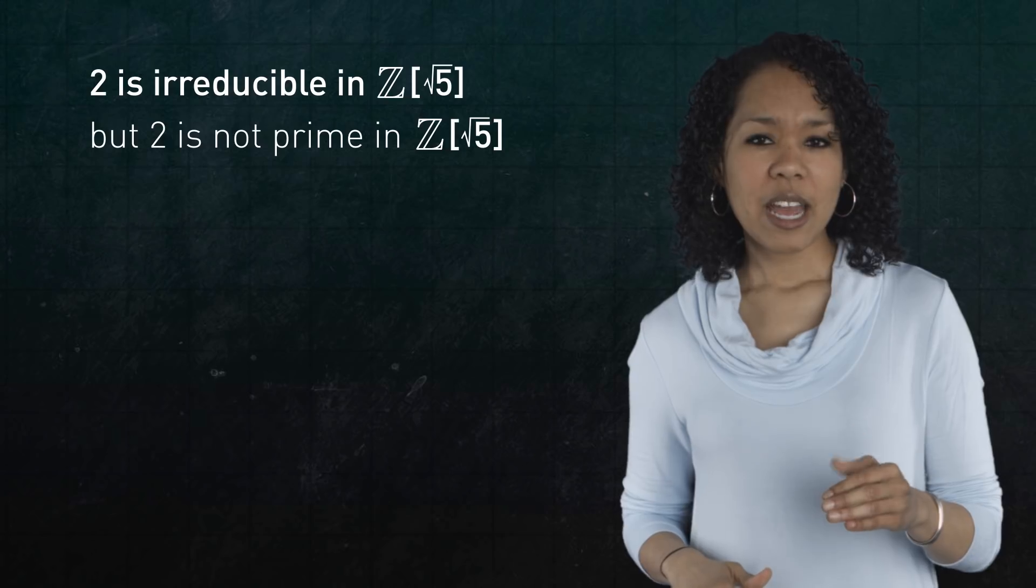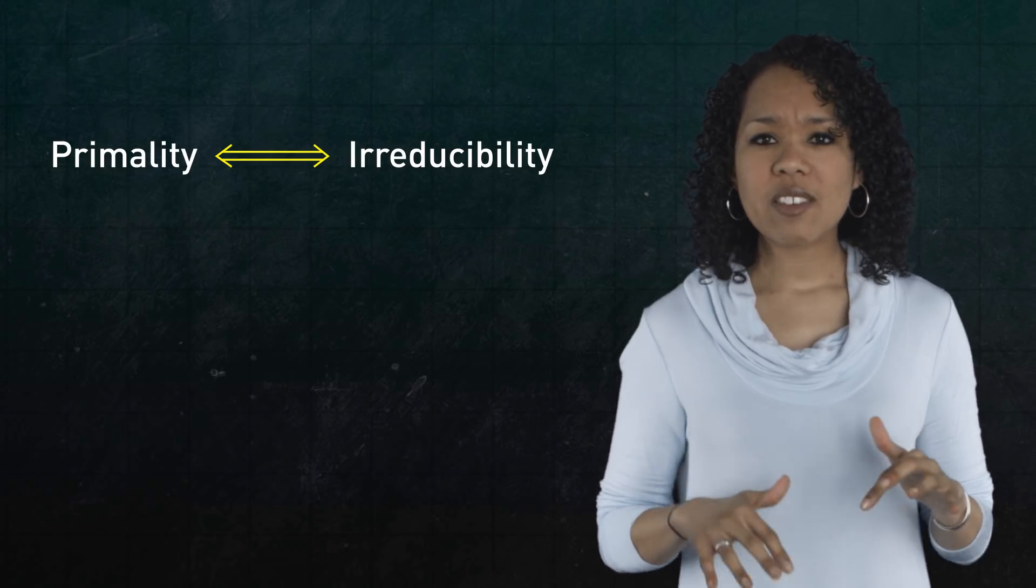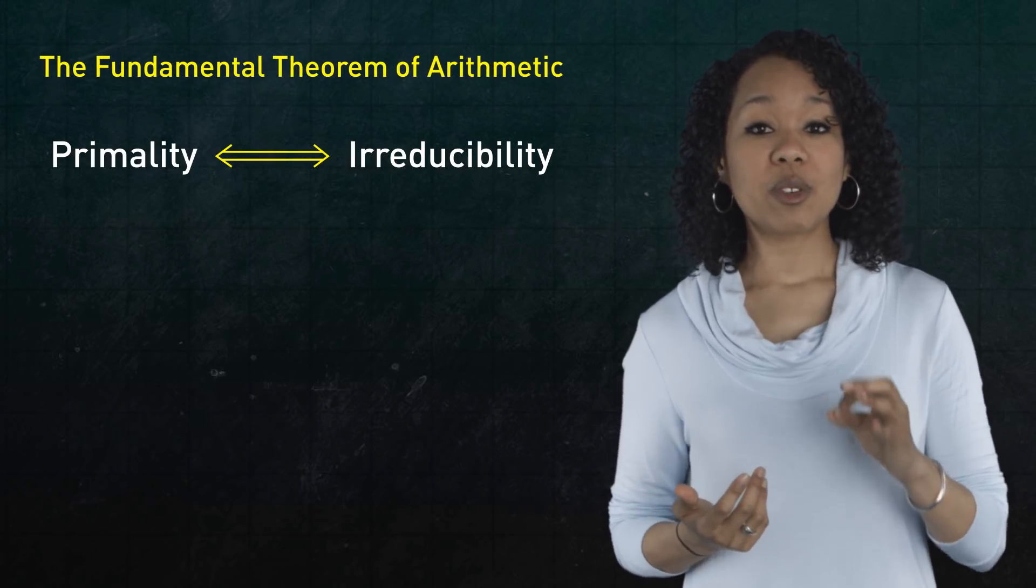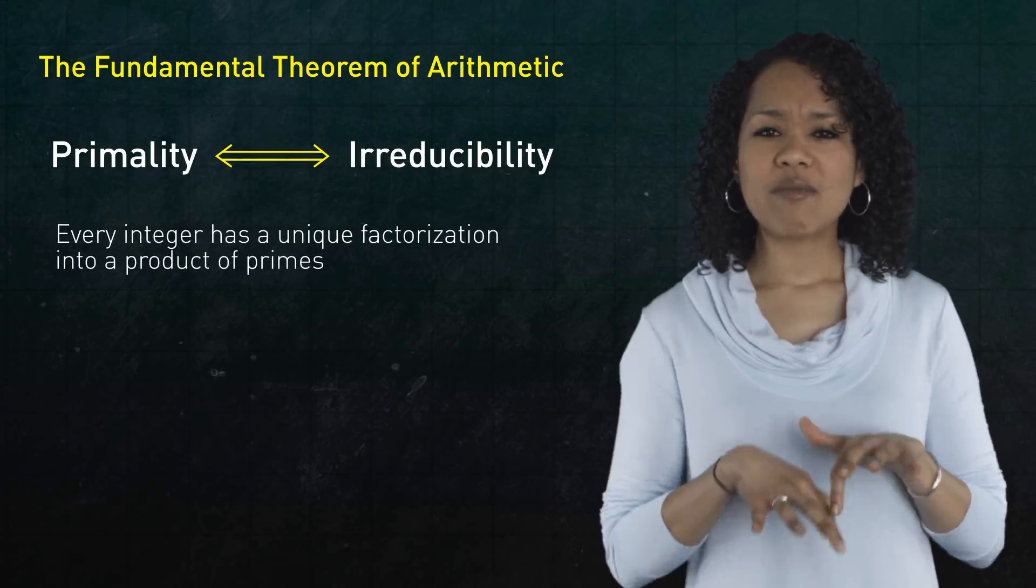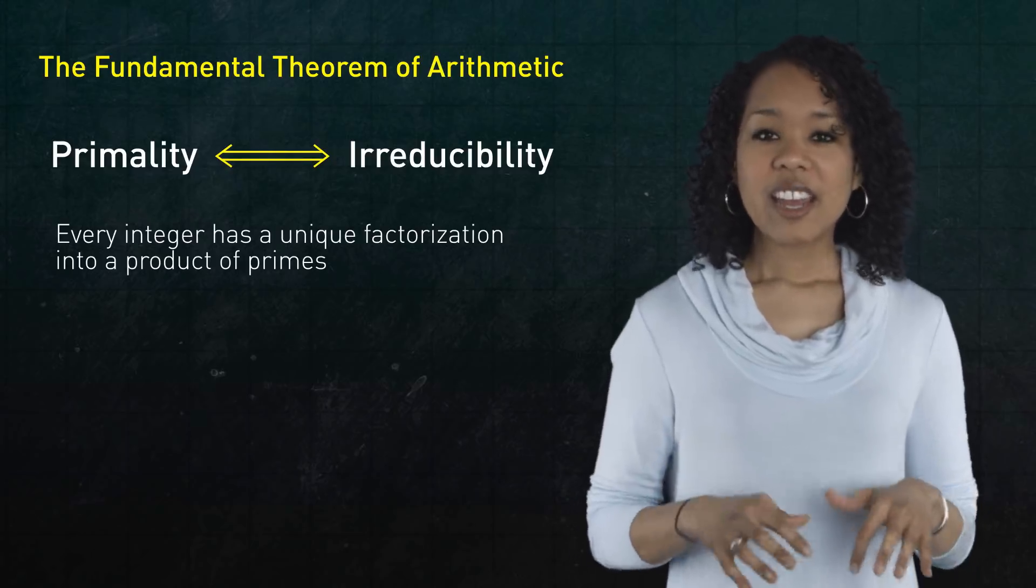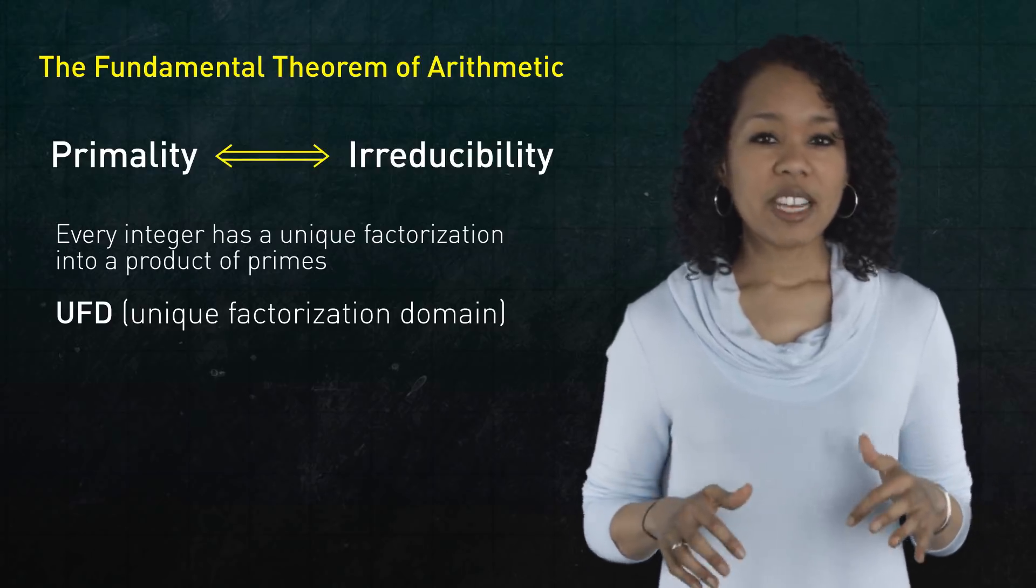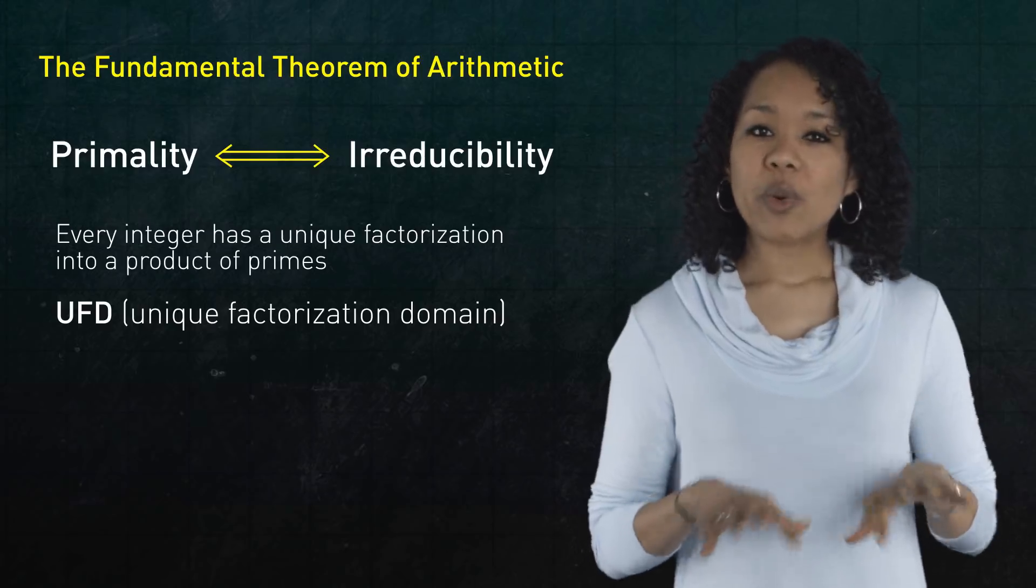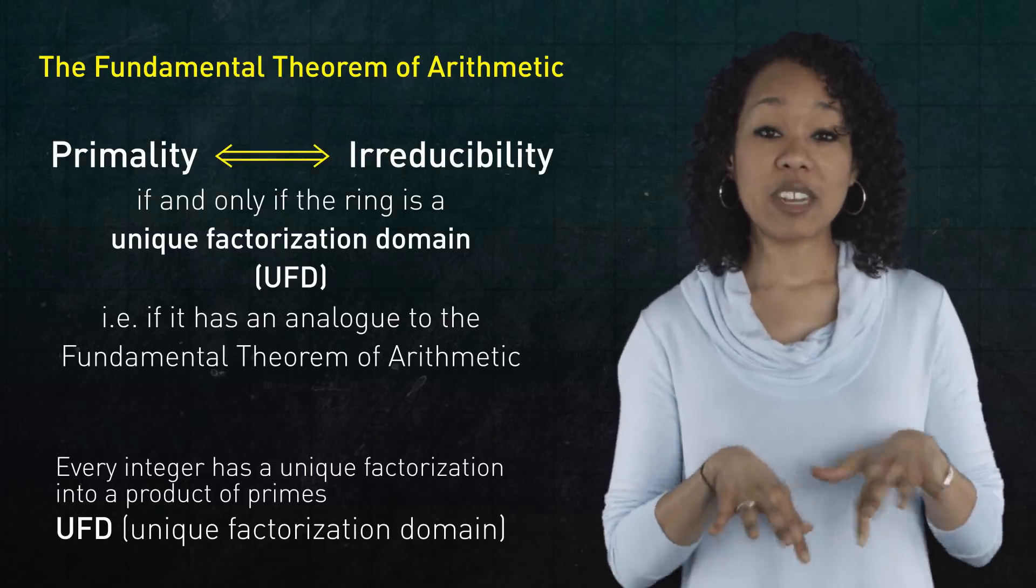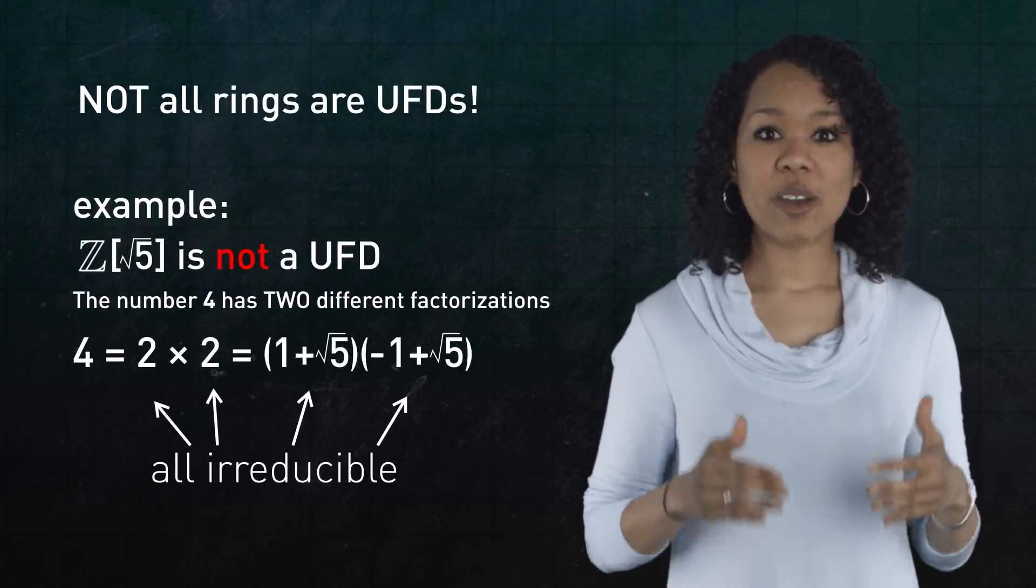Now here's the punchline. Primality and irreducibility will coincide if and only if your ring has a very special property, and the integers have that property. What is it? The fundamental theorem of arithmetic. Namely, that every integer has a unique factorization into a product of primes. More generally, if you're looking for a buzzword, the integers form a unique factorization domain, or UFD. And according to abstract ring theory, irreducible and prime are equivalent concepts if and only if your ring is a UFD. Specifically, if each element can be uniquely written as a product of irreducible elements. What's interesting is that not all rings are UFDs.